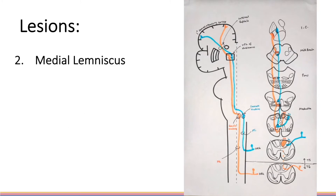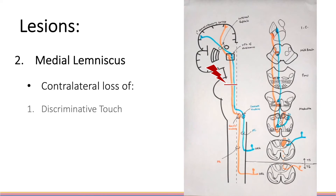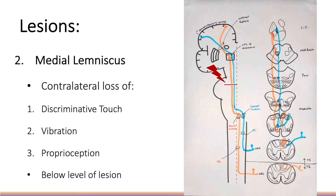A lesion in the medial lemniscus, through which the fibres ascend in the brainstem, will lead to contralateral loss of discriminative touch, vibration and proprioception below the level of the lesion. This time the loss is contralateral because the fibres have already decussated within the medulla.